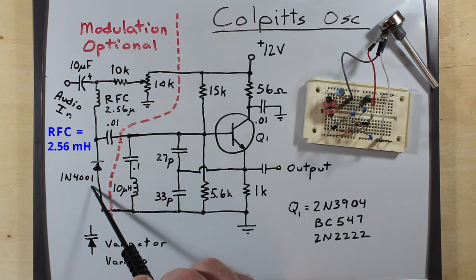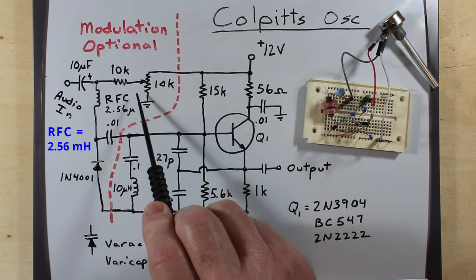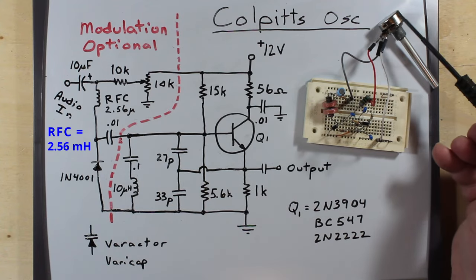I also biased the 1N4001 slightly with this pot. So that's the pot over here.